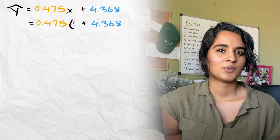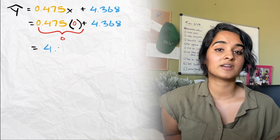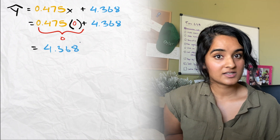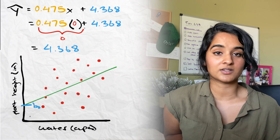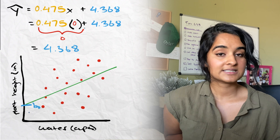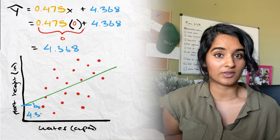Now let's interpret these values. Let's interpret the intercept, b0 = 4.36. An intercept is the value of y wherever x is equal to 0. So in context of this problem, whenever the amount of water is equal to 0, the predicted average height of a plant in inches is going to be 4.36.